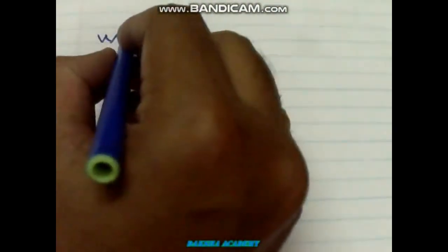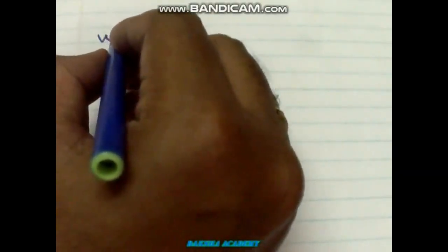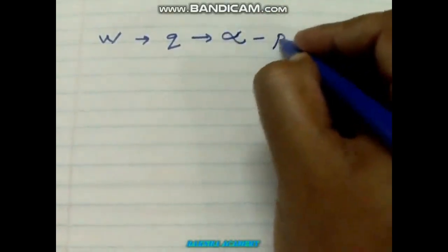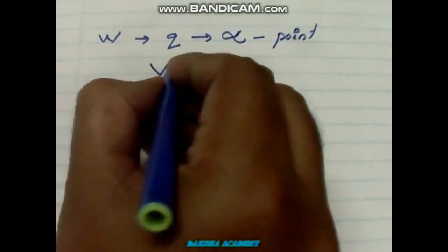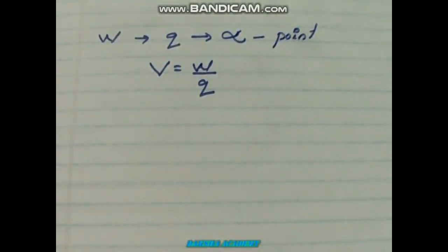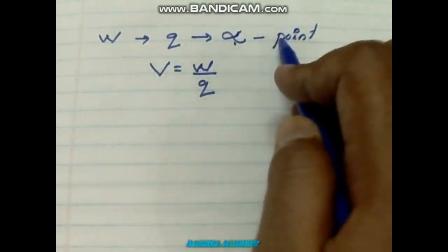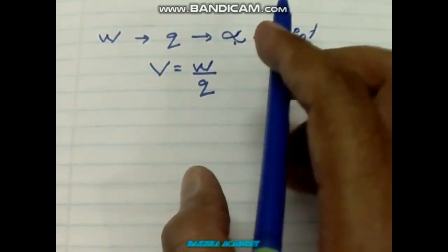If W is the work done in moving a charge q from infinity to a point, then the potential at that point can be represented by the letter V. So V equals W by Q. This is the expression for potential: V = W/Q, where W is the work done in moving charge q from infinity to a point.